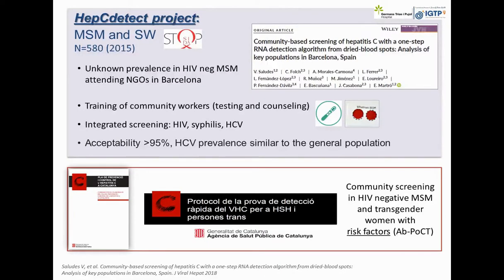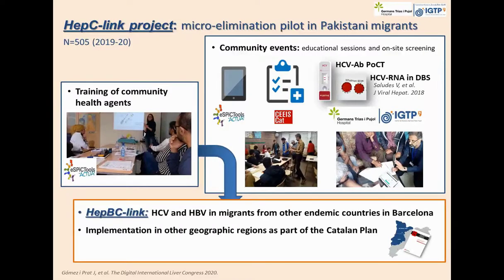In our first project with DBS, we screened men who have sex with men (MSM) and sex workers attending an NGO in Barcelona. We trained community workers at this NGO in HCV testing, counseling, and DBS collection. These tests had very high acceptability. While HCV prevalence was similar to that in the general population — below 1% in Spain — based on this and other studies, this protocol of community screening of hepatitis C in HIV-negative MSM and transgender women was implemented as part of our regional plan.